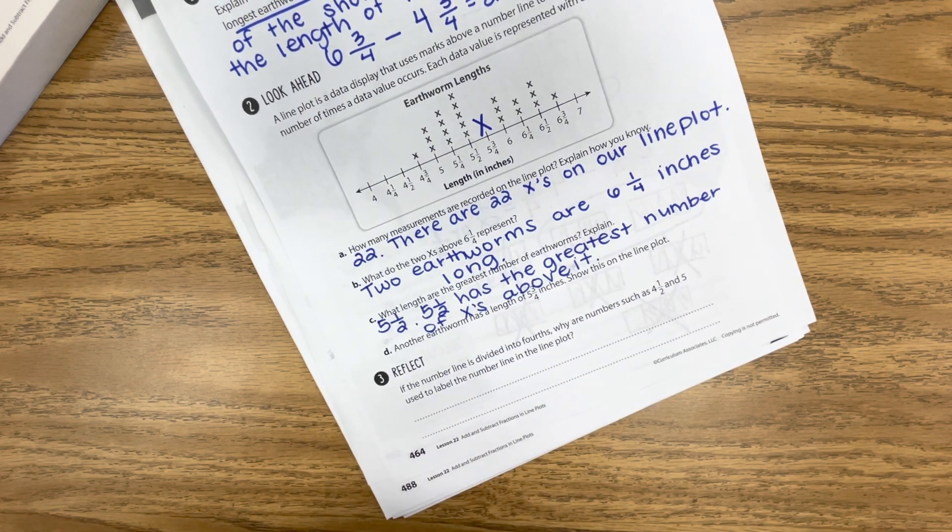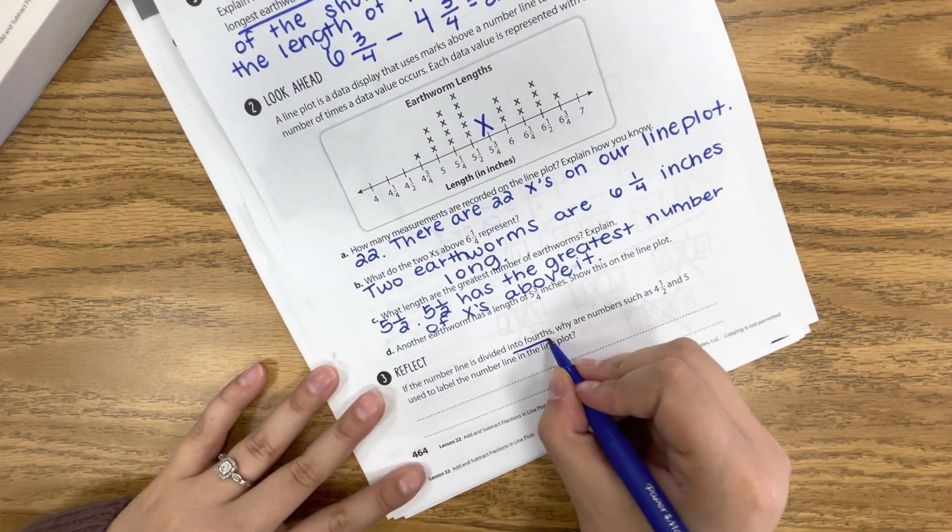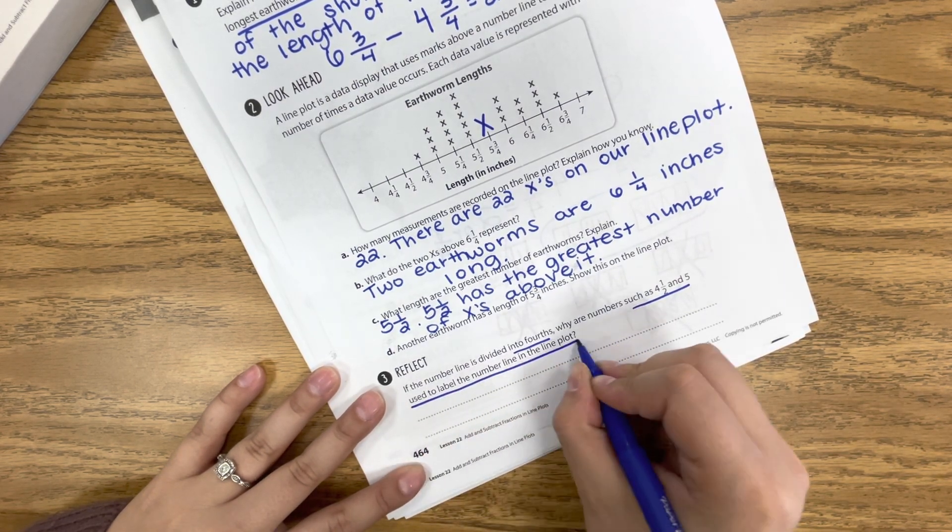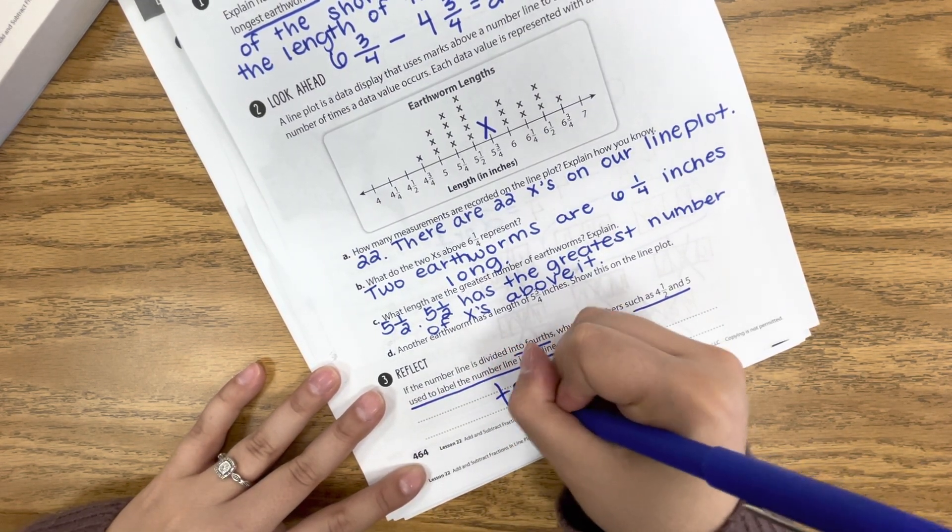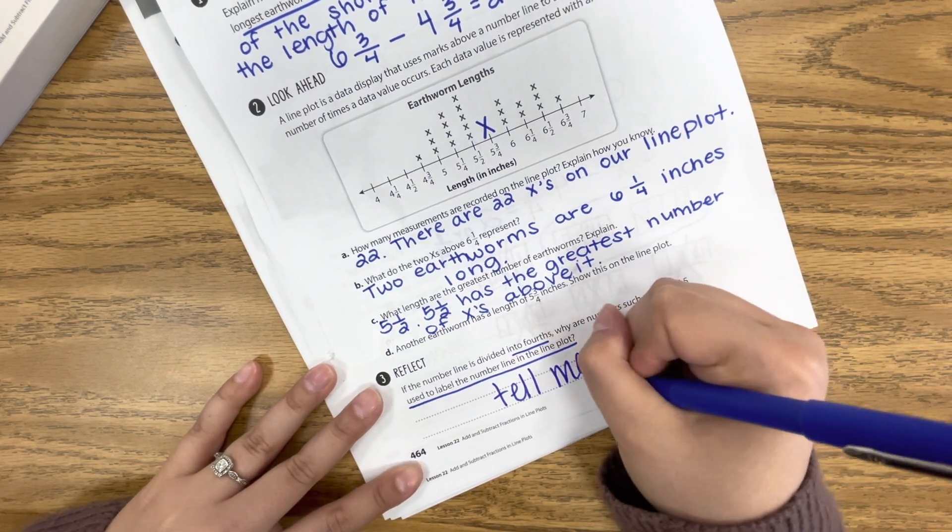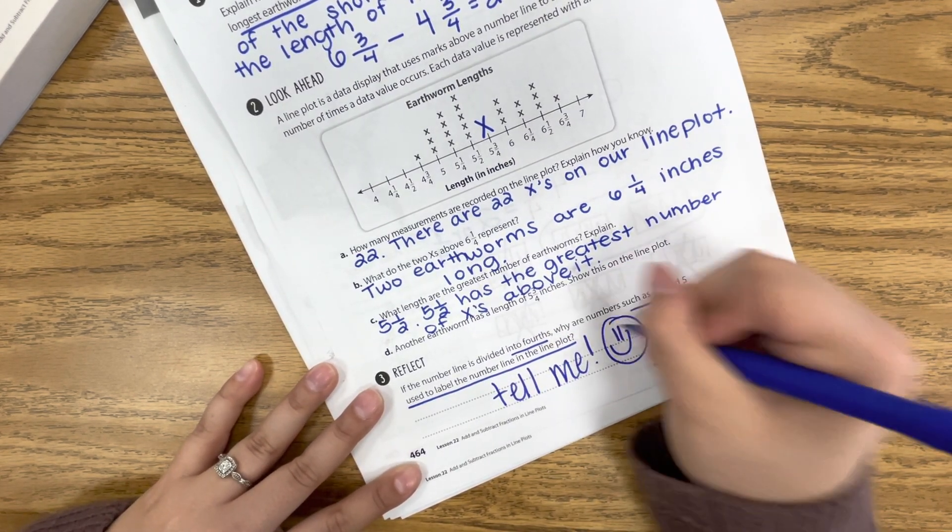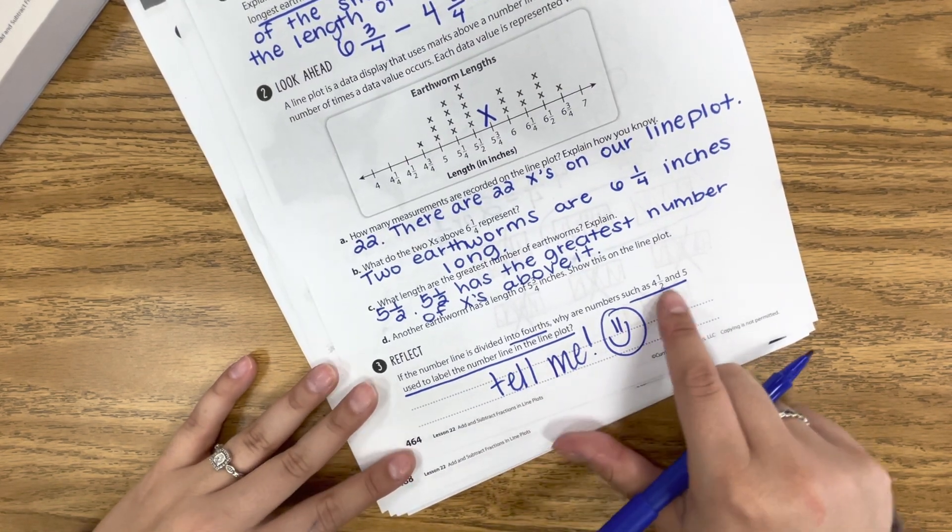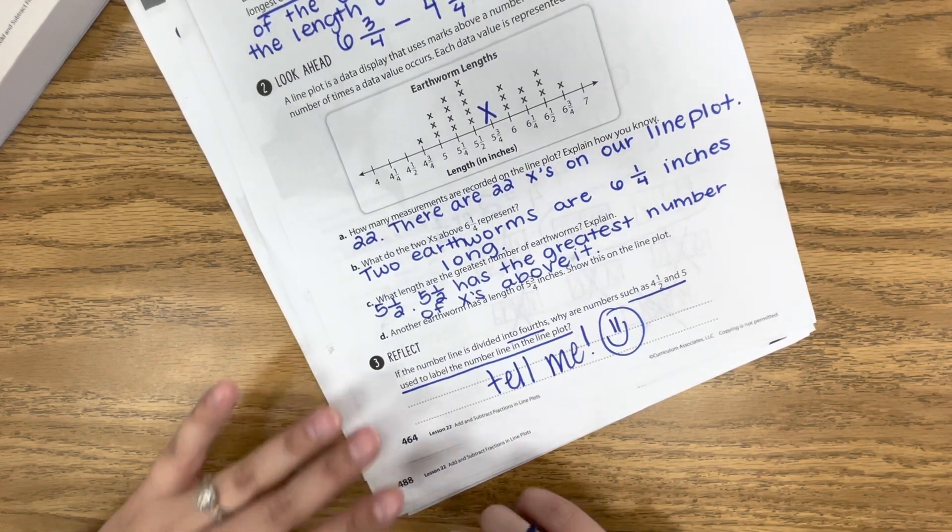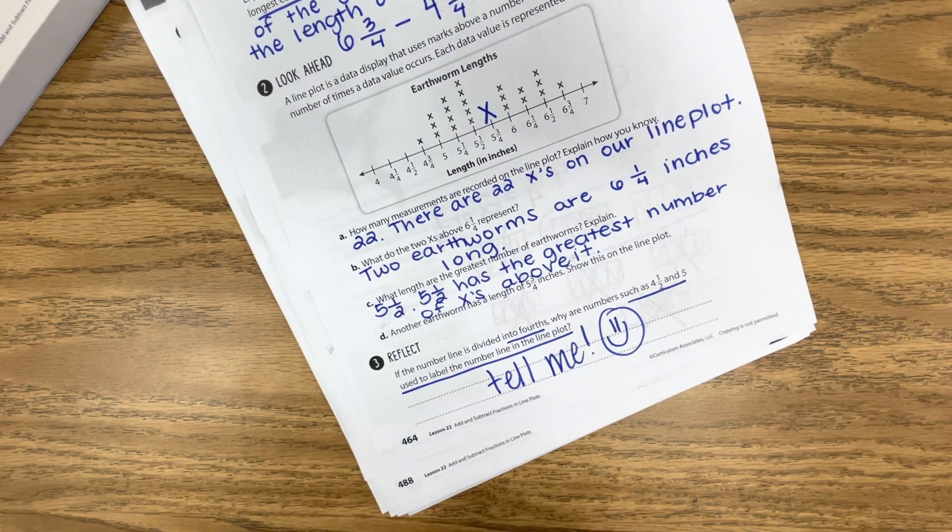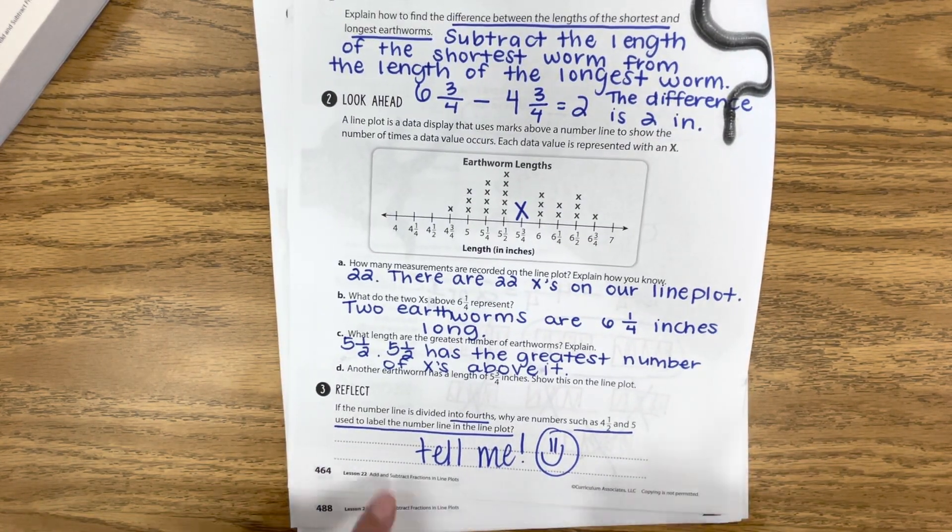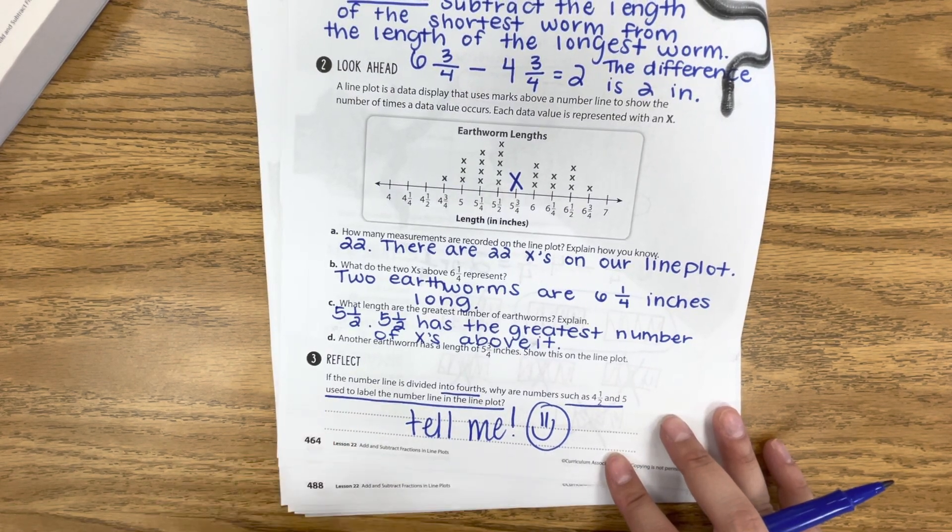So for the reflect, if a number line is divided into fourths, why are numbers such as 4½ and 5 used to label the number line in this plot? And I want you to pause right here and tell me in the Google Meet. So what are we thinking? If the number line is divided into fourths, why do we have 4½ and 5 used on the number line? So if you have any questions on page 464, please pause here. Don't forget to talk to me about number 3.